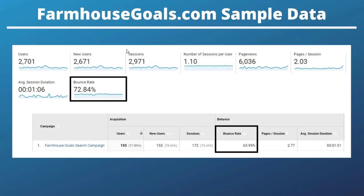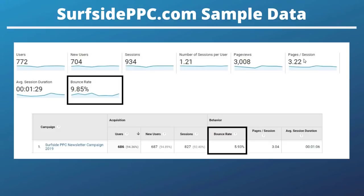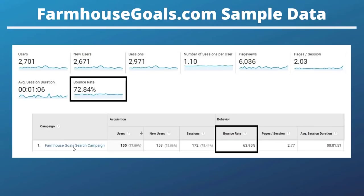Opening up FarmhouseGoals.com — another website similar to beachfront decor but for farmhouse decor — you can see the bounce rate is very similar at 72.84 percent. They run the same exact theme and a very similar setup. There are fewer pages per session compared to SurfsidePPC.com. You don't need to just optimize for bounce rate, but it does represent how good a user experience your website has, depending on your overall goals.